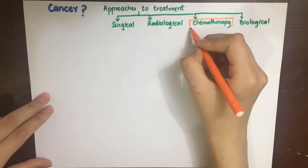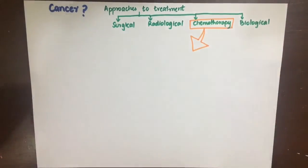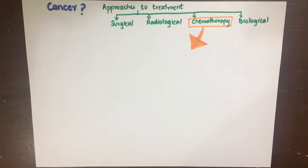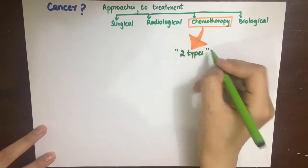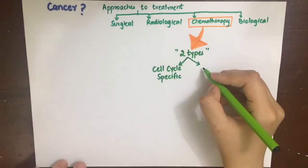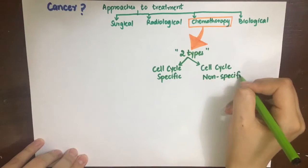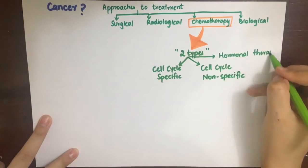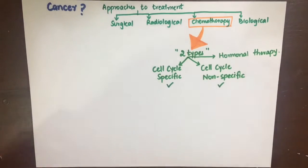We'll primarily focus here on chemotherapy in pharmacology. Cancer is a disease of mitosis, so we can inhibit this uncontrollable division by acting on the cell cycle. Drugs are divided into cell cycle specific anti-cancer drugs and cell cycle non-specific drugs, which can act on any phase. Some cancers are also treated with hormonal therapy using anti-hormonal agents, which we've already covered in endocrine pharmacology.